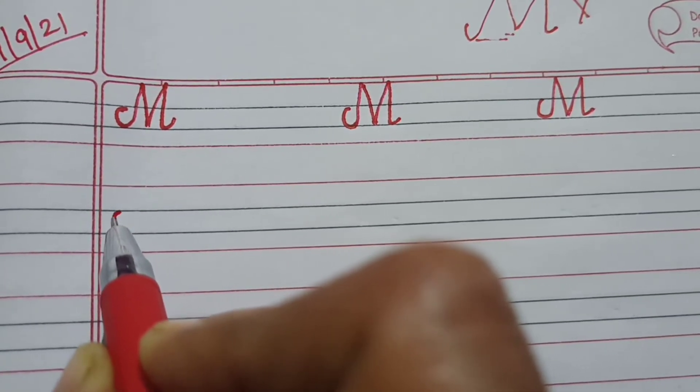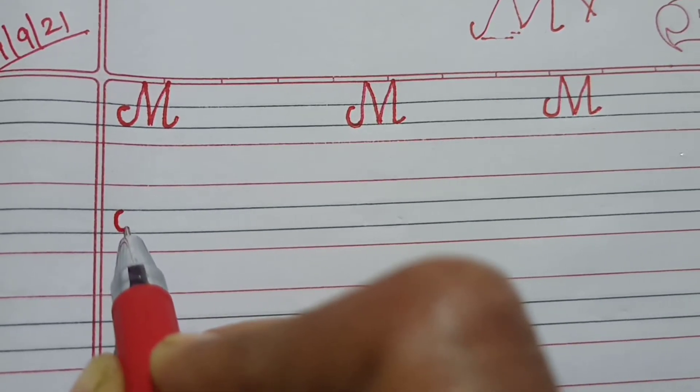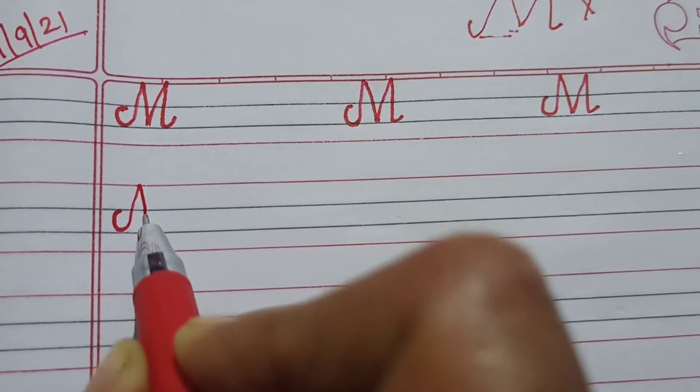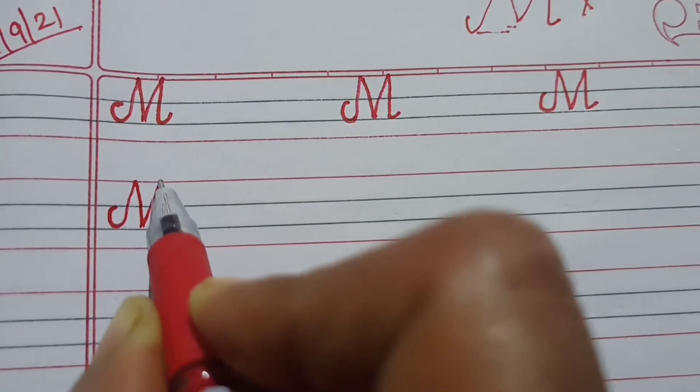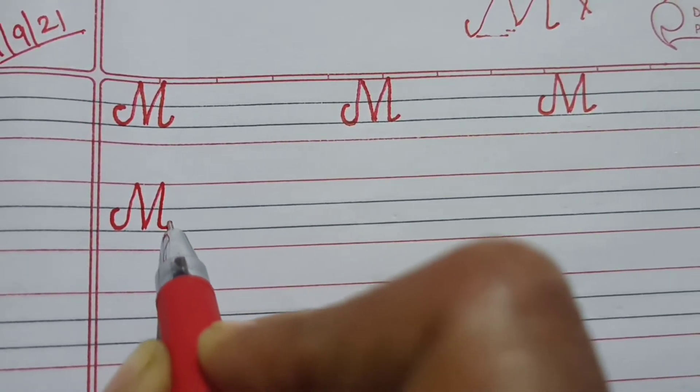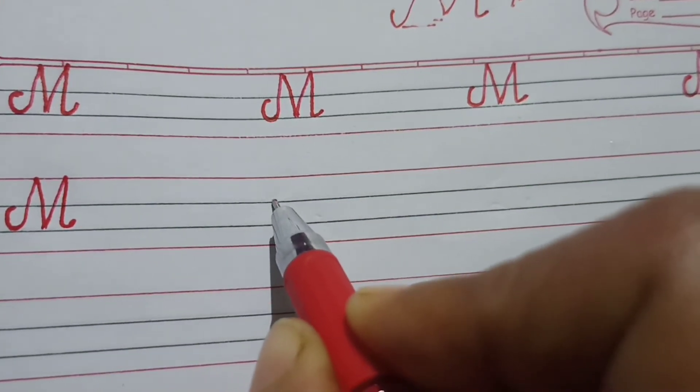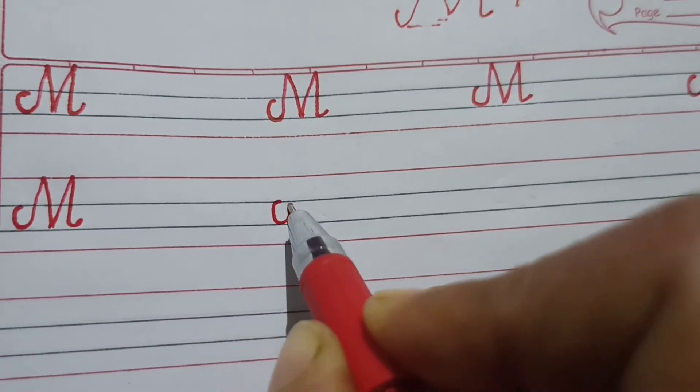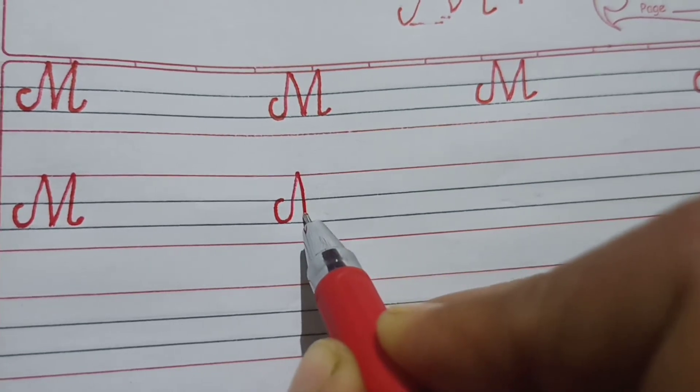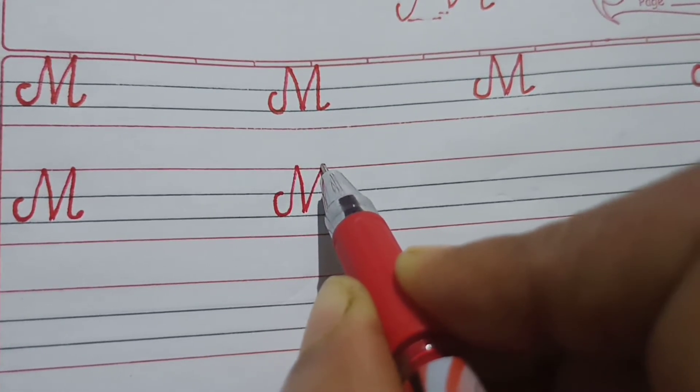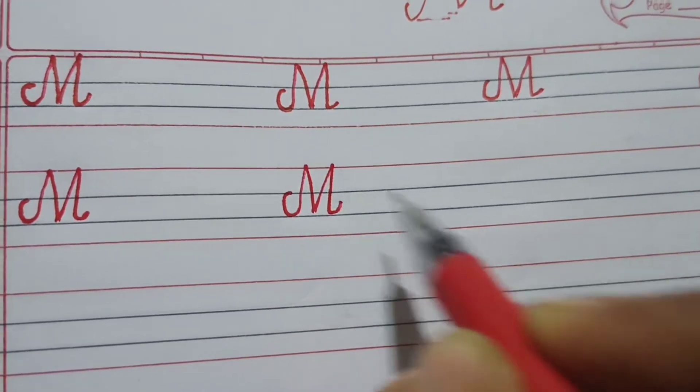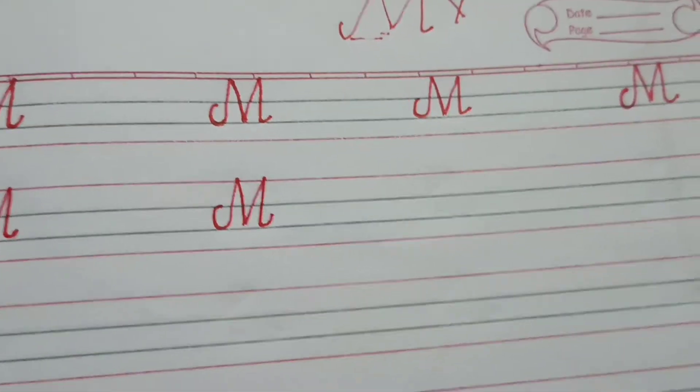So, first how we will do? We will take a C, go up, come down, go up, come down and turn. M, M for mango, M for monkey. Okay children. So, this is M.